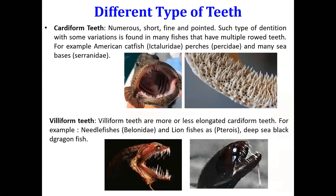The first type is cardiform teeth. They are very short, fine, pointed, and numerous in number, present in multiple rows. As you can see in the image, there are numerous short pointed teeth — this is a bass where you can see teeth which are short, fine, and numerous. Examples of fishes with cardiform teeth include American catfish of family Ichthyidae, some perches like Channa, and some sea basses.